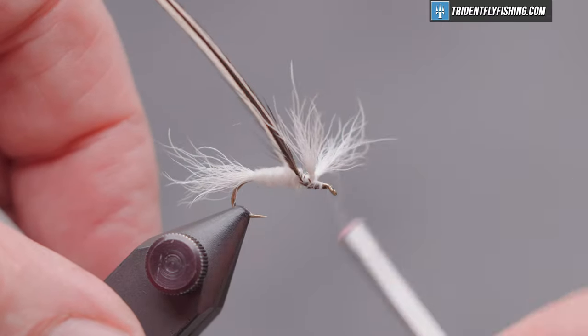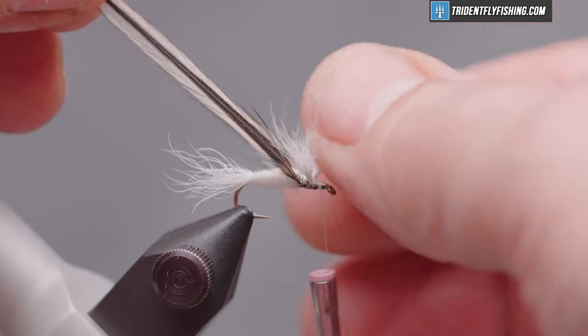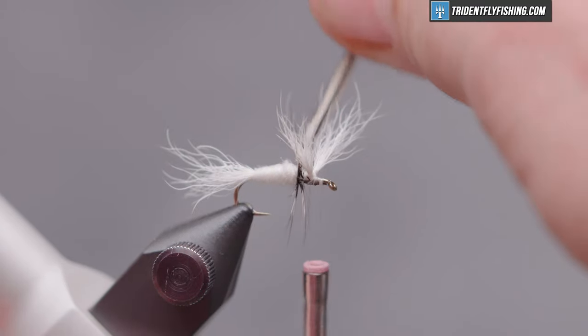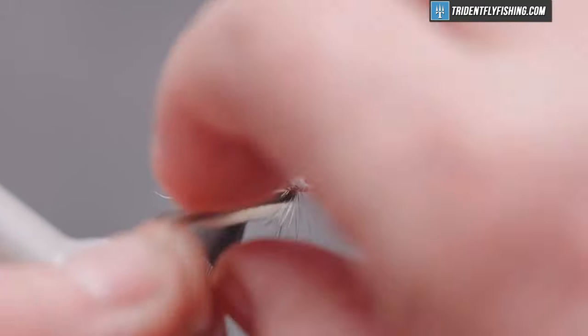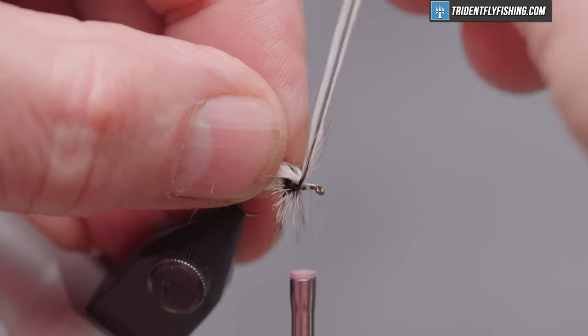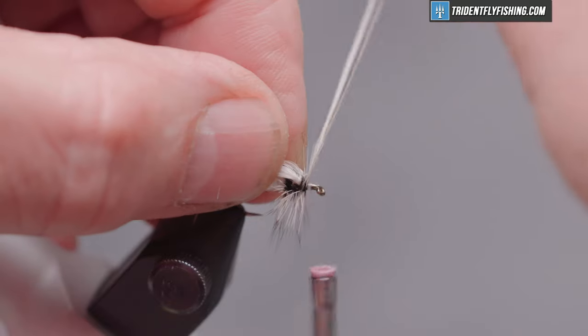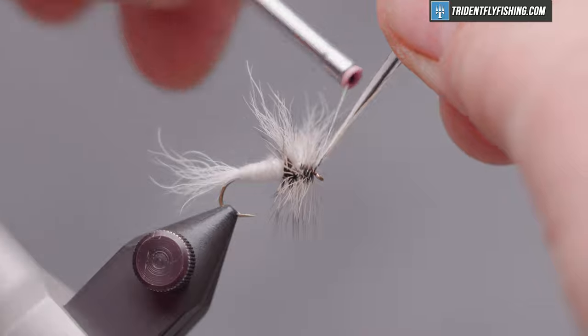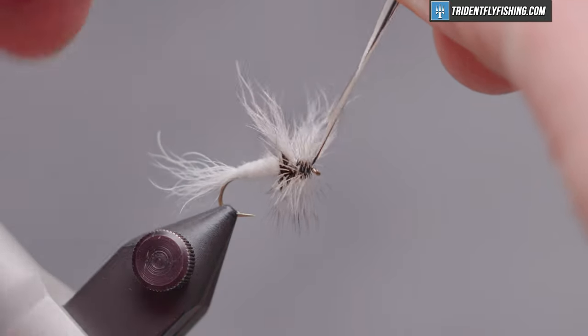And run our thread up to the eye. And minding the wings. We'll take a few turns behind them. Jump our hackle in front. And wrap that up to the eye. And reach the eye. Capture our hackle.